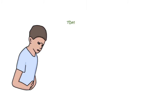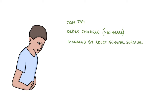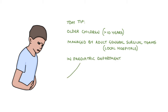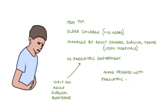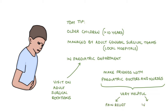A final Tom tip for you: older children — for example, those aged above 10 years — will often be managed by adult general surgical teams at local hospitals, provided there is a paediatric department in the hospital. This means you may end up visiting the paediatrics wards whilst on your adult surgery rotations. It's worth making friends with the paediatric doctors and nurses, who can be very helpful if you're unsure about pain relief or IV fluid prescriptions in children, as this is quite different to adults.